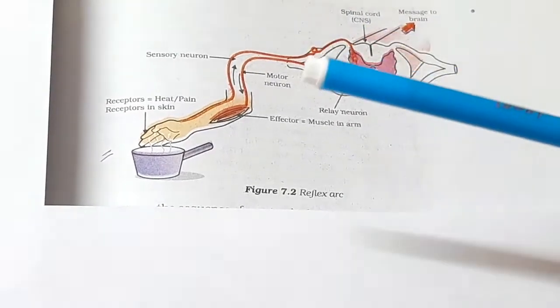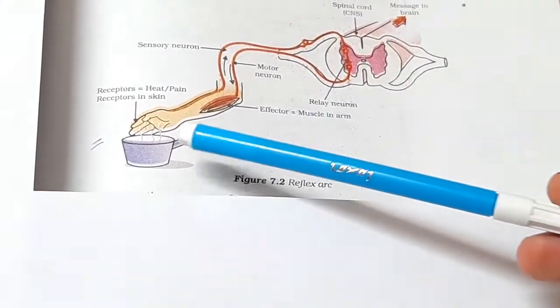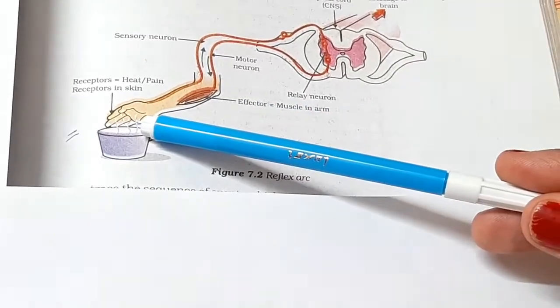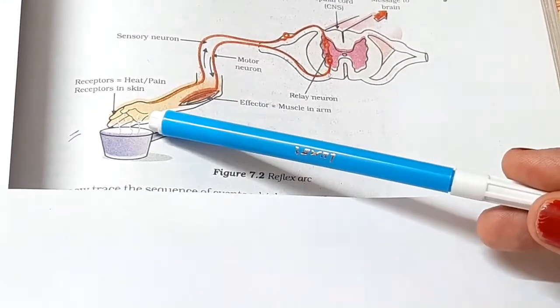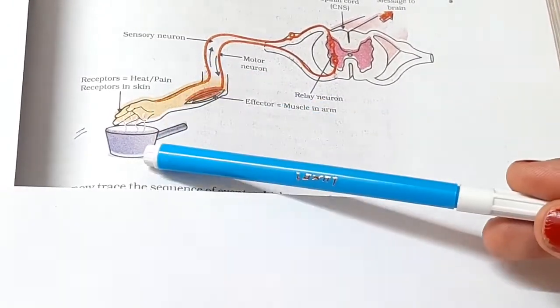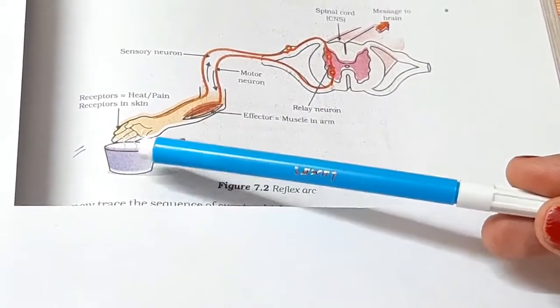This is an example of reflex arc. See, here is a hot object and as we touch the hot object, what is the receptor in this case? The receptor is the skin. And the hot object is the stimulus - that is, heat is the stimulus.